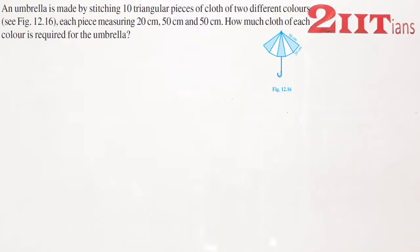An umbrella is made by stretching 10 triangle pieces of a cloth of 2 different colors. You can see in the figure each piece measuring 20cm, 50cm and 50cm. How much cloth of each color is required for the umbrella?